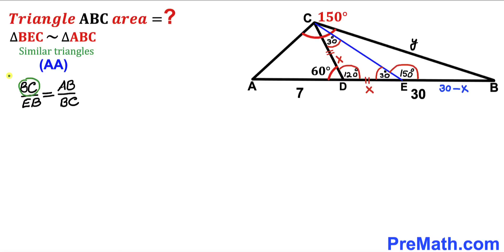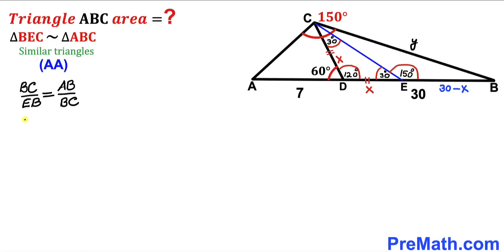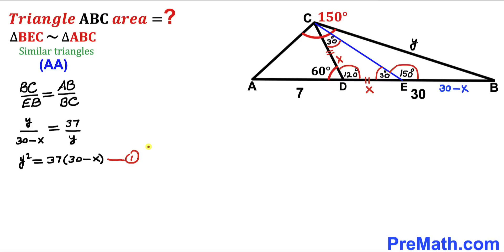From the similarity, the ratio of BC to EB equals the ratio of AB to BC. BC is Y, EB is 30 minus X, and AB is 7 plus 30 equals 37. So the equation becomes Y divided by (30 minus X) equals 37 divided by Y. Cross-multiplying gives Y squared equals 37 times (30 minus X). This is Equation 1.